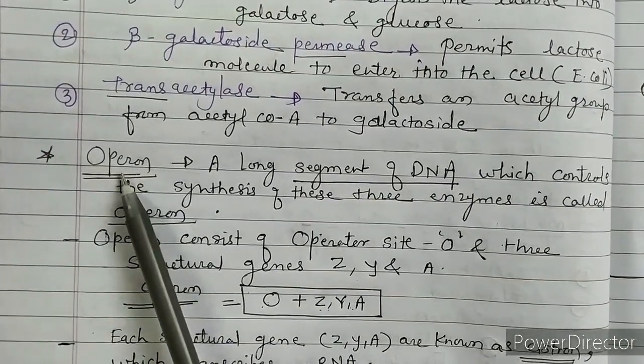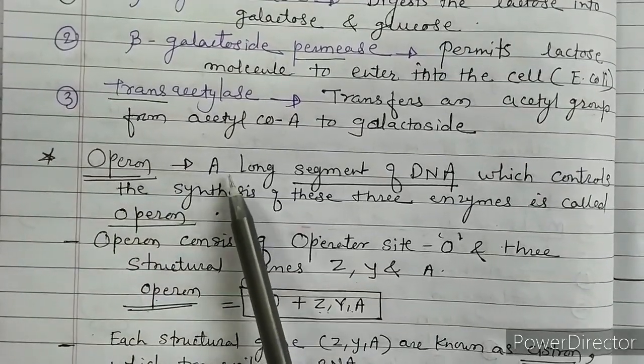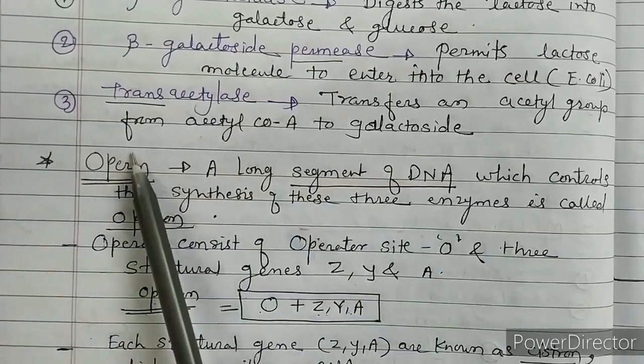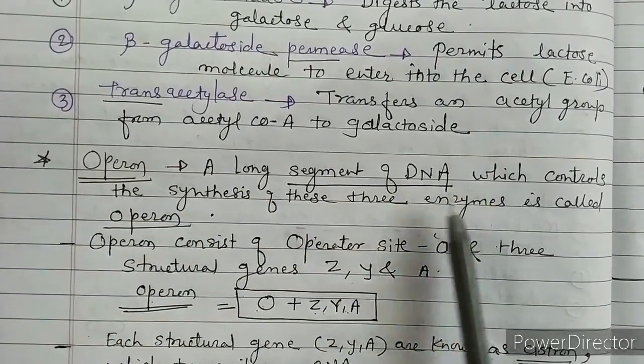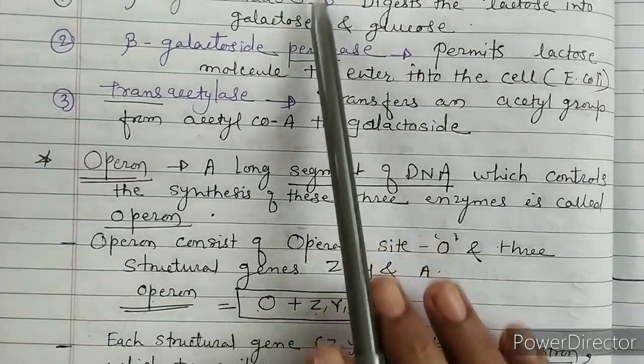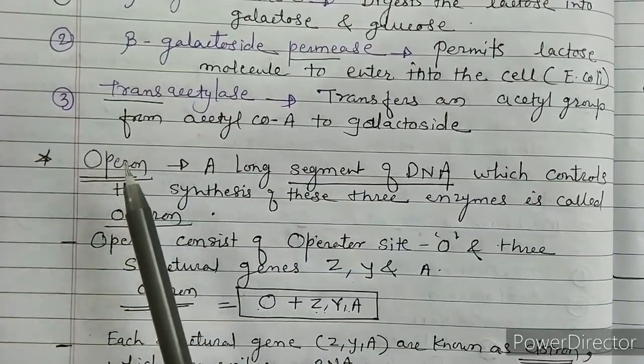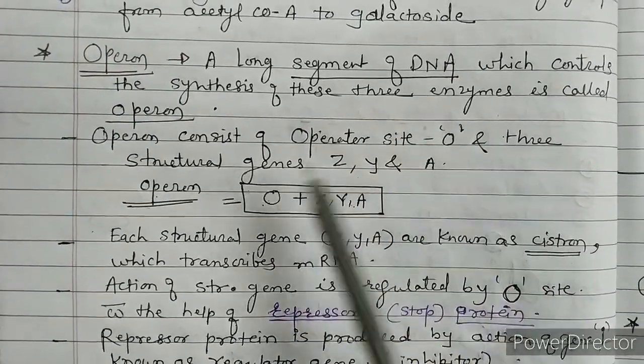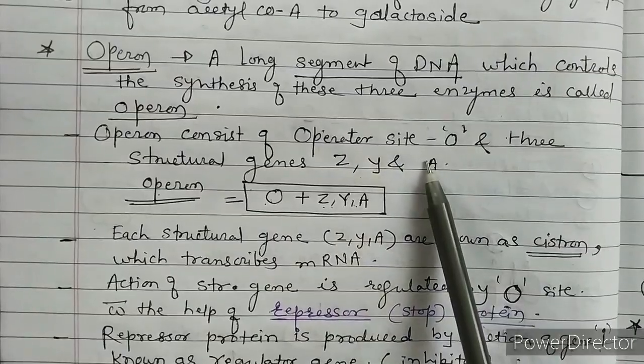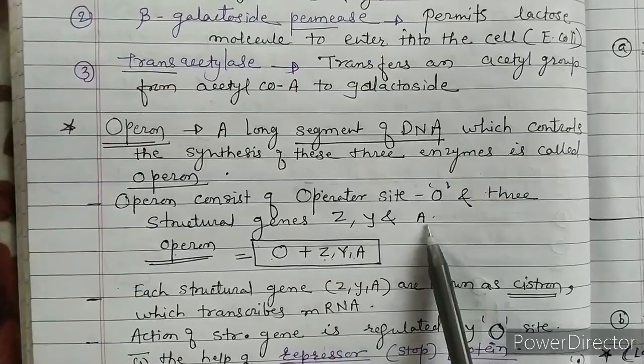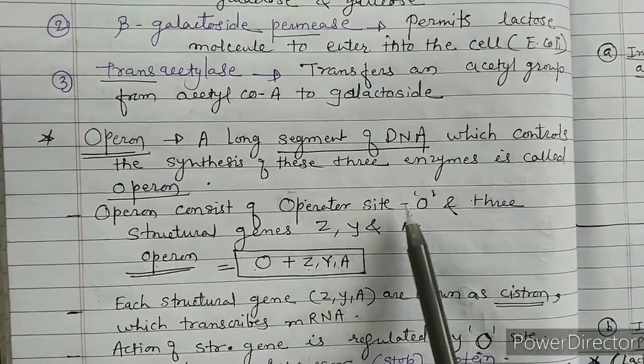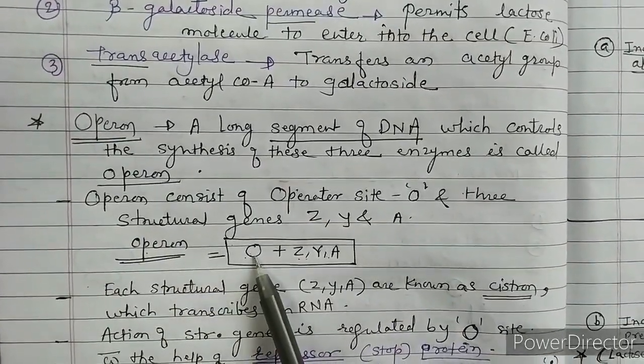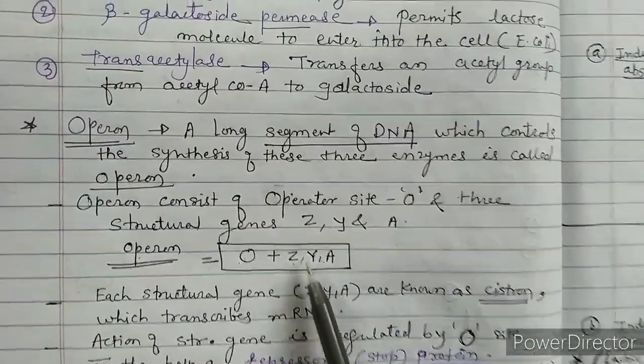Now we will see what is an operon. See, this new term for you - operon is nothing but a long segment of DNA which controls the synthesis of these three enzymes. So this operon consists of operator site O and the three structural genes Z, Y, A. These three structural genes and operator site together make up the operon.